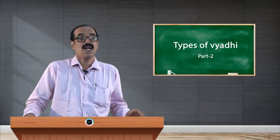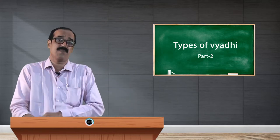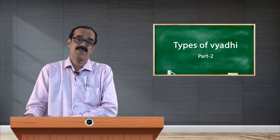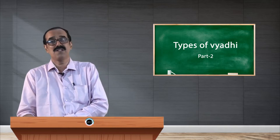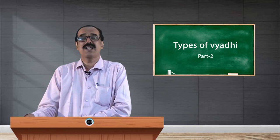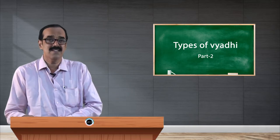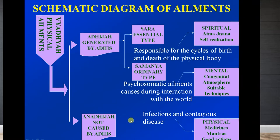So we have Sara type and Samanya type. What are the examples for Samanya type of Vyadhi? Psychosomatic elements like hypertension, diabetes, peptic ulcer, arthritis, and various metabolic disorders — all of these lead to Samanya type of Vyadhi.